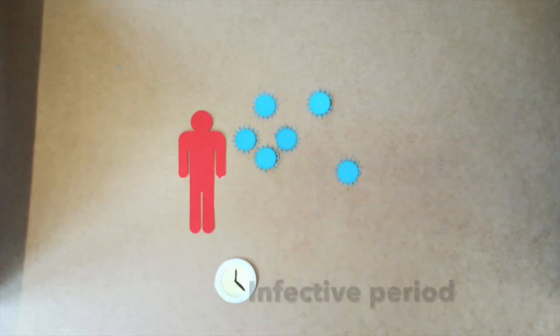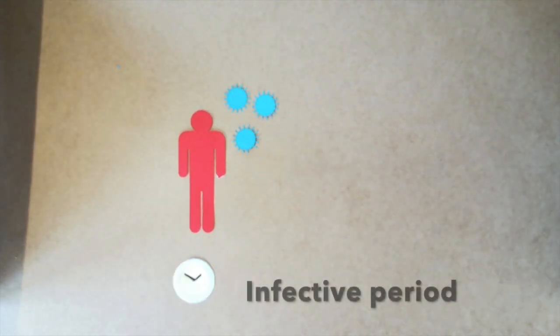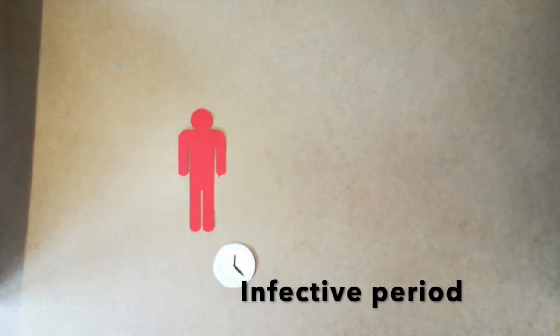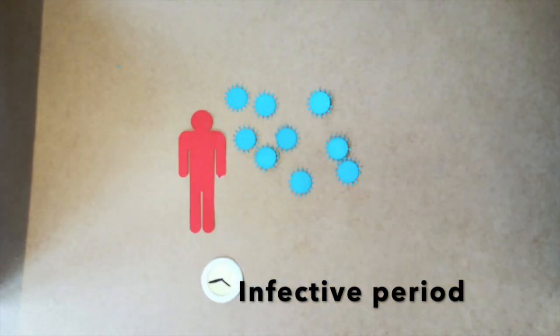The first factor is the infective period. This is for how long a sick person can transmit the disease to other people. The longer the infected period, the higher the contagious rate.